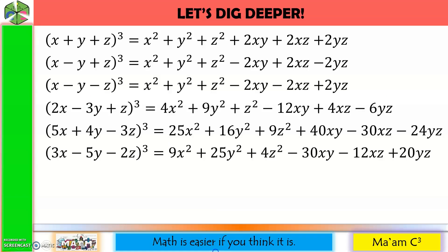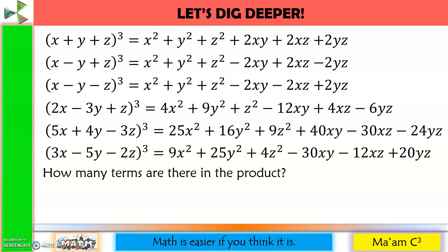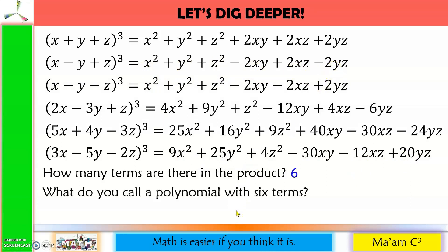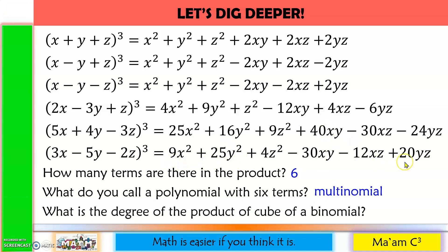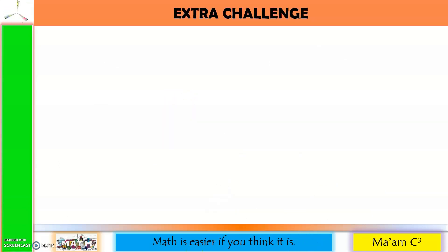Let's dig deeper. Here are the examples we discussed earlier. How many terms are there in the product? Let us count: 1, 2, 3, 4, 5, 6. How about here? 1, 2, 3, 4, 5, 6. So there are 6 terms in the product. What do you call a polynomial with 6 terms? We call it multinomial. And what is the degree of the product of a square of a trinomial? This is quadratic.